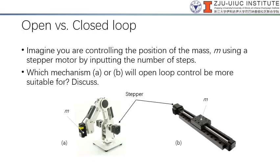So just a very quick concept check. When you look at this question here, imagine that you are controlling the position of a mass using a stepper motor by inputting the number of steps. In this case, you have two mass by these two control systems. One is a robot arm and one is a positioning stage or translating stage. So which mechanism will be more suitable with your open loop control? If you look at this, try to think about this.